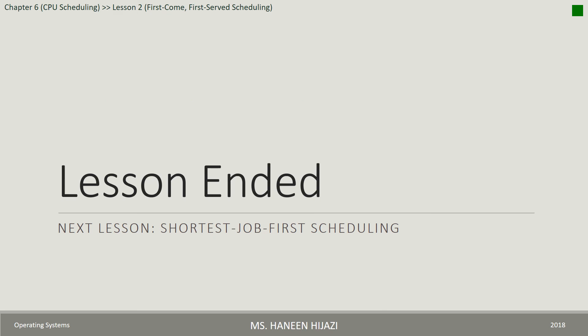The Convoy Effect بده يؤدي إلى long average waiting time and low CPU and device utilization. This lesson has ended. Next lesson will be about Shortest Job First scheduling.